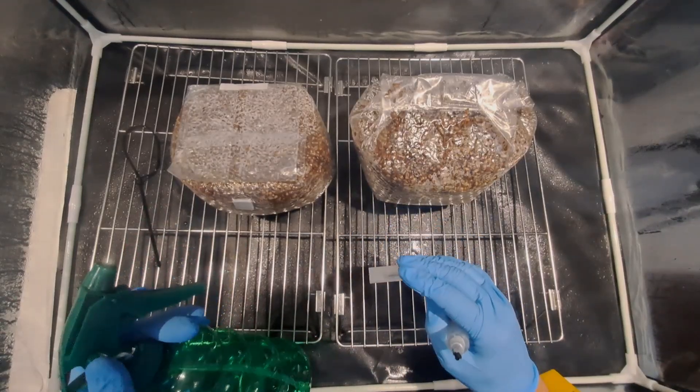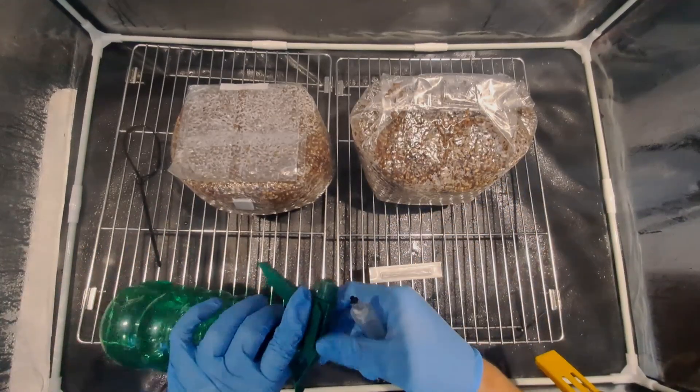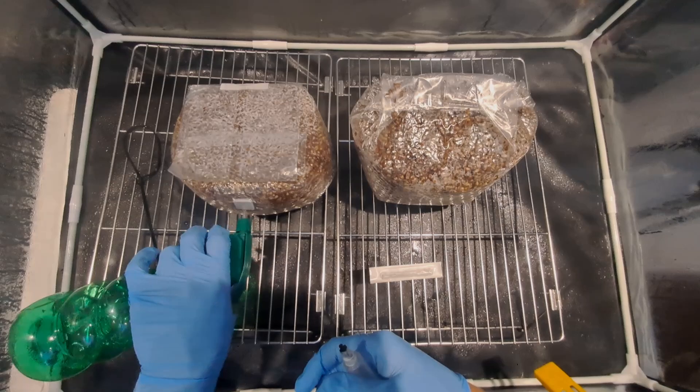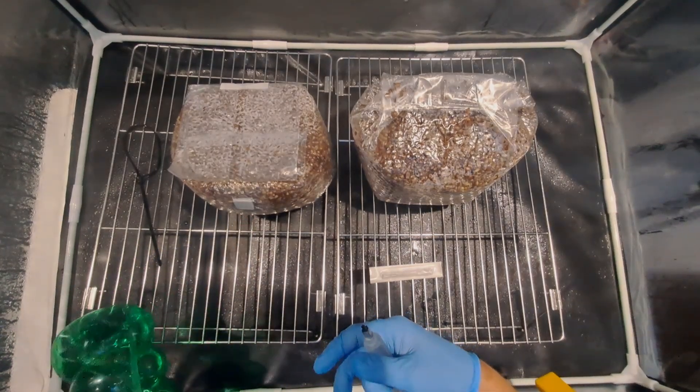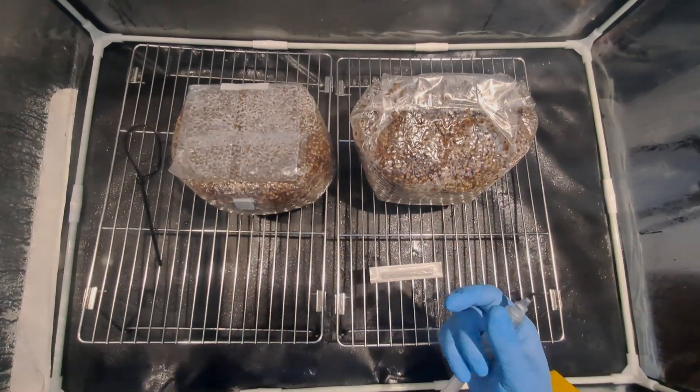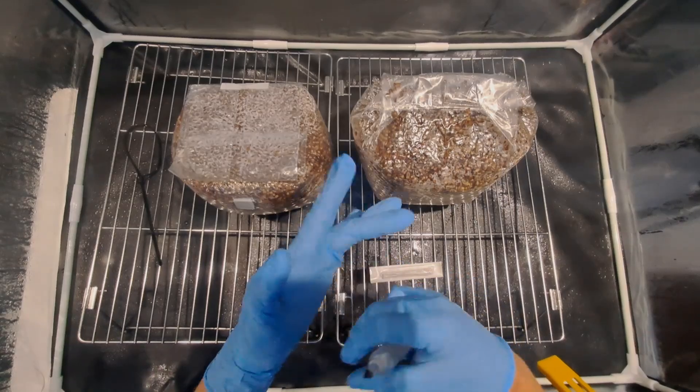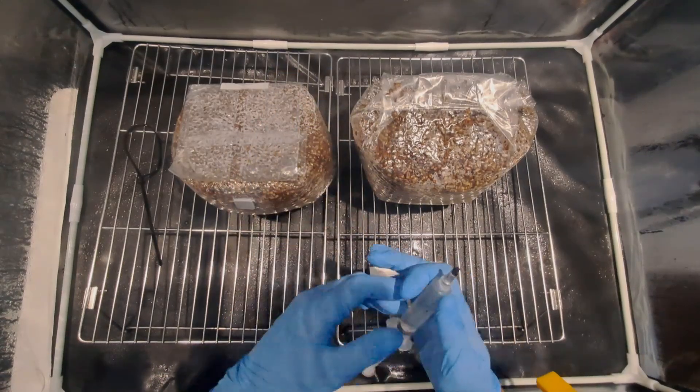I then spray the injection port with alcohol. Normally I wouldn't use a spray disperser inside of a still air box it's better to use wipes because you're essentially just creating turbulence every time you spray inside of a still air box.